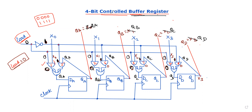In summary, using a controlled buffer register with a load control input, we can control two operations. This is about a 4-bit controlled buffer register — this is purely the theoretical part. If we use the circuit diagram, we can control the load externally. The load is zero or one, and each AND gate operation is performed. The OR gate output is the input of the flip-flops — DA, DB, DC, DD. Whatever data you have in DA, DB, DC, DD, the same will be obtained at the outputs. Subscribe to the channel, like and share.